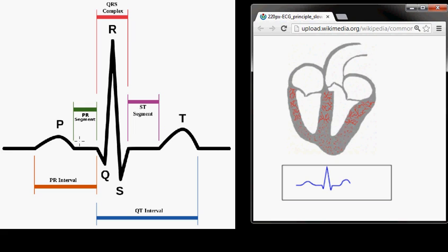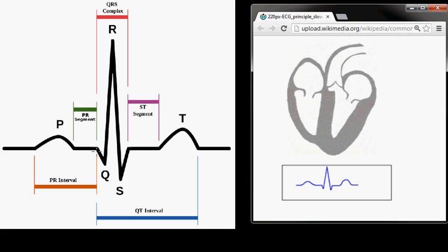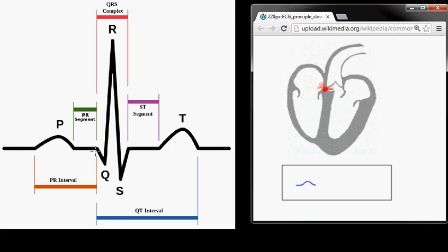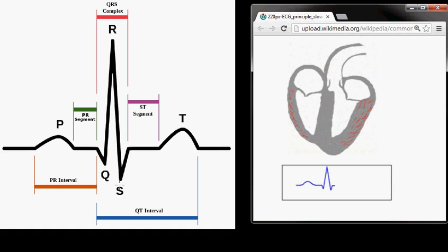After that segment, your signal goes from the SA node to the AV node, and from the AV node through an organized conduction system, the electrical current quickly passes through the entire ventricles through this complex, which is known as the QRS complex.